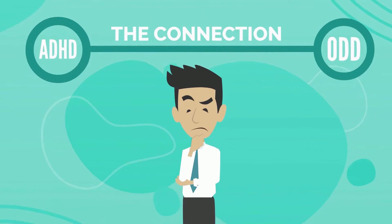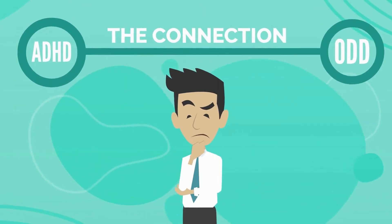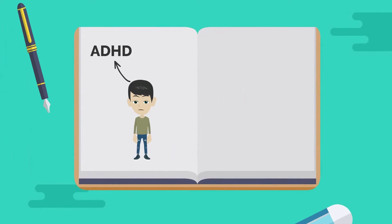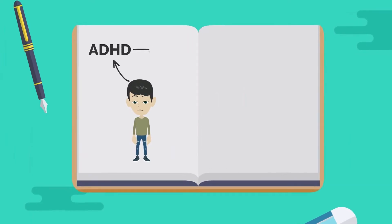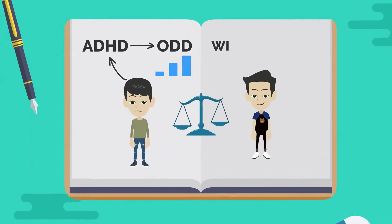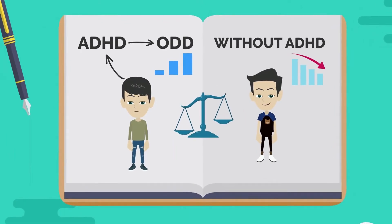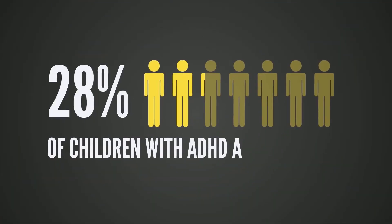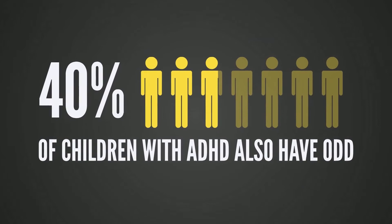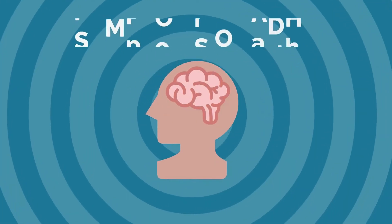So what's the connection between ADHD and oppositional defiant disorder? Well, studies have shown that children with ADHD are more likely to develop ODD than children without ADHD. In fact, up to 40 percent of children with ADHD also have ODD.